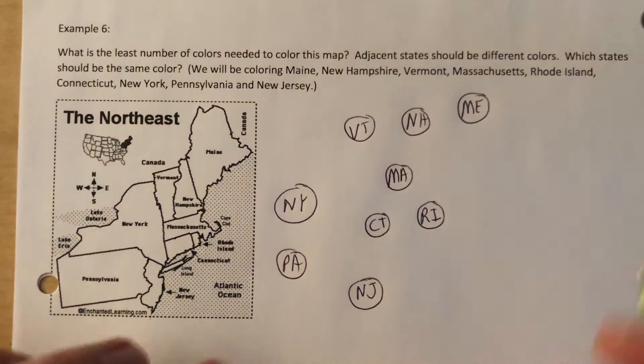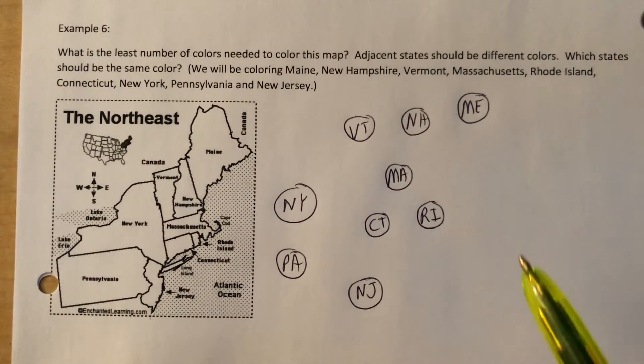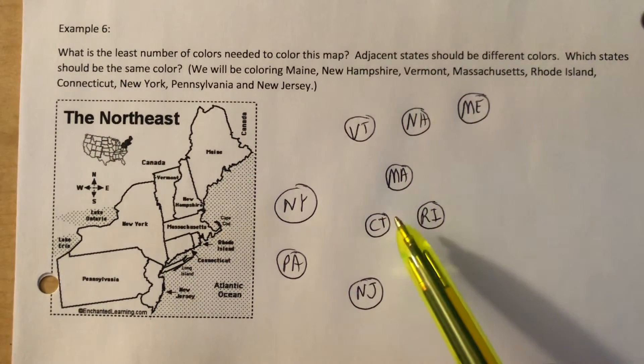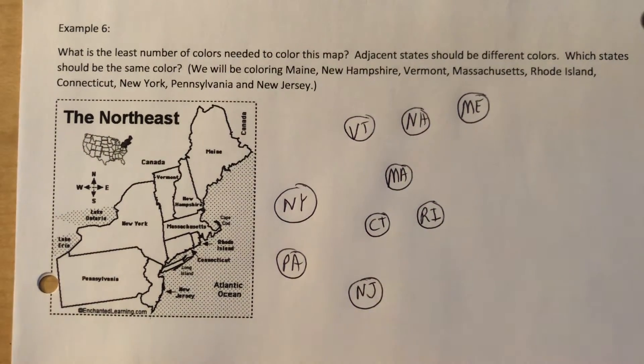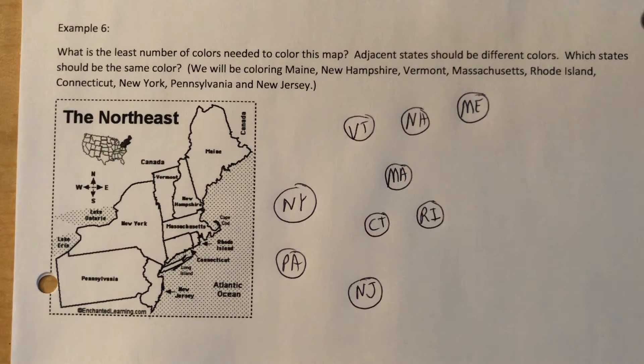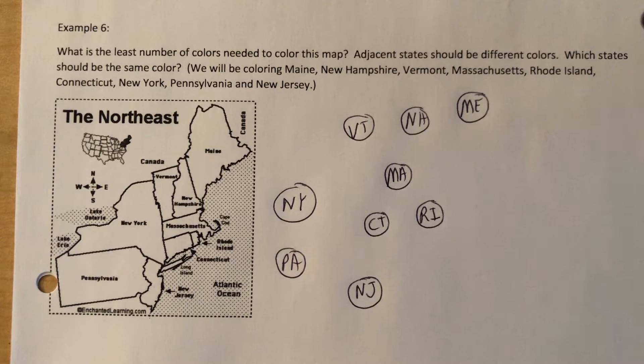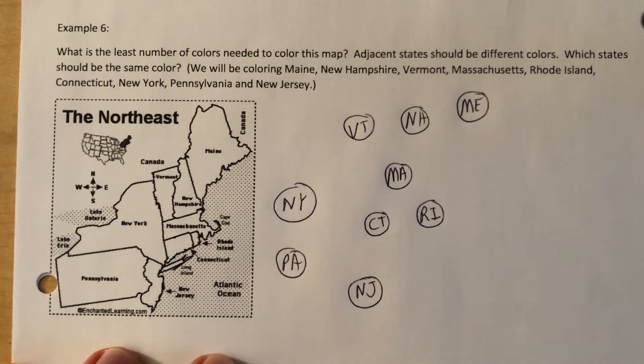Do we have them all? One, two, three, four, five, six, seven, eight, nine — yes, we do. Let's connect the ones that share a border. We're going to connect the ones that share a border, and when we do we have to be very careful, so I'm going to go one state at a time.